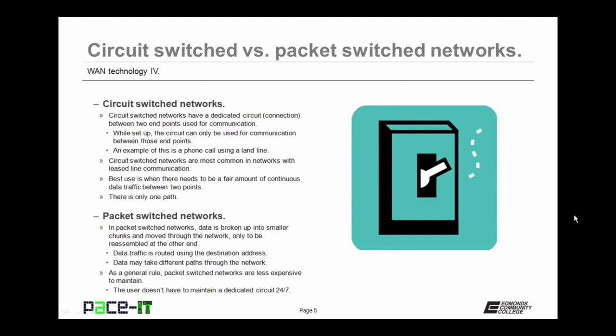In packet-switched networks, data is broken up into smaller chunks and moved through the network, only to be reassembled at the other end. The data is routed using the destination address, and the data may take different paths through the network. As a general rule, packet-switched networks are less expensive to maintain because the user doesn't have to maintain a dedicated circuit 24/7 — they're only paying for what they're using.